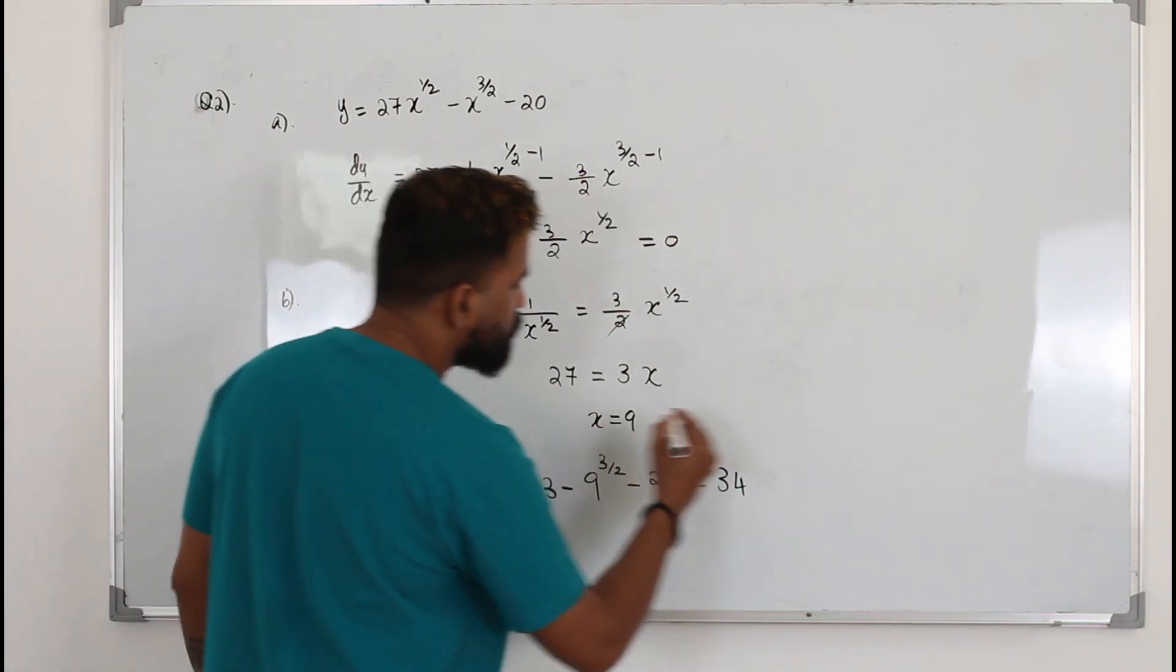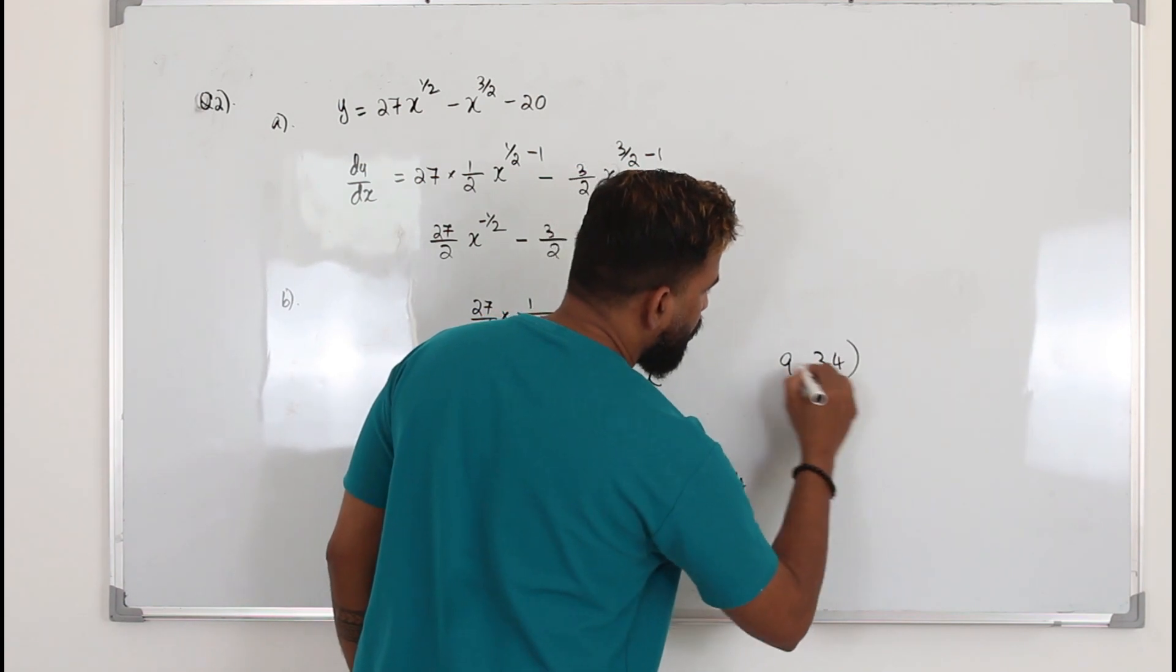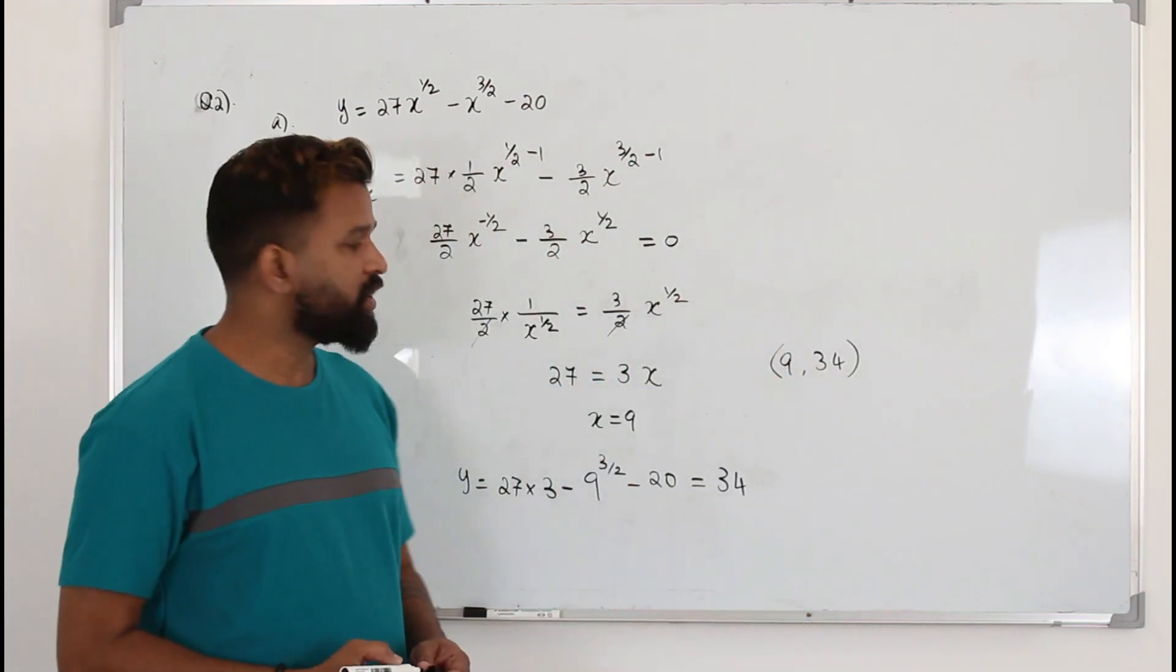So y is 34, x is 9. So write the values as a point. 9, 34 is the stationary point.